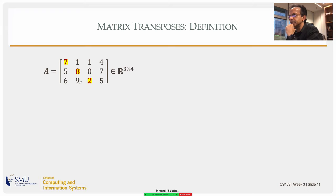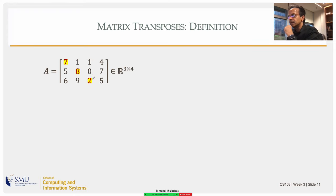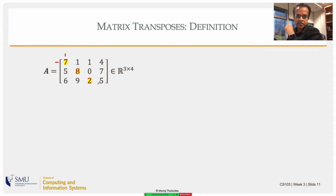Now let's try to define the transpose formally. The main diagonal of a matrix is the collection of elements highlighted, where the first is at position (1,1), second at (2,2), third at (3,3) — in general at position (i,i). The main diagonal always starts at the top-left corner and goes down and to the right as far as possible. It is defined for all matrices, not just square matrices.